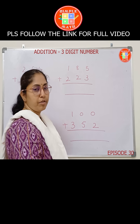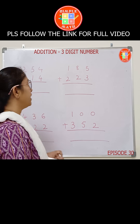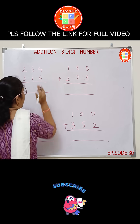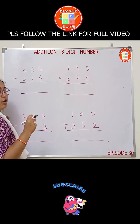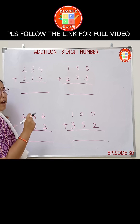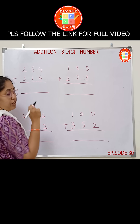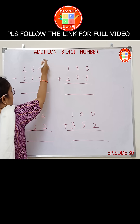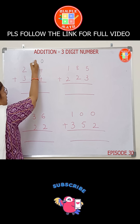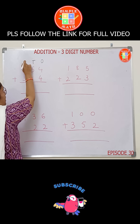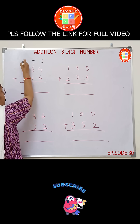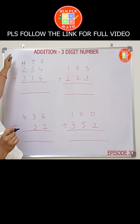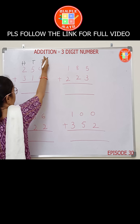Here we have a few examples of addition of a 3-digit number by a 3-digit number. We always start addition from the 1's column. Let's start marking the 1's, 10's, and 100's columns. This 4 is in the 1's column, this is the 10's (T), and the next is the 100's (H). 1's column, 10's column, and 100's column. We always start addition from the 1's column.